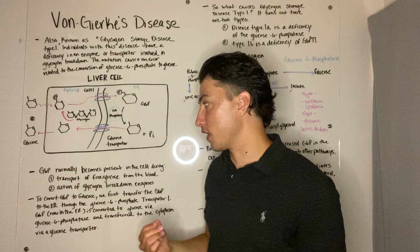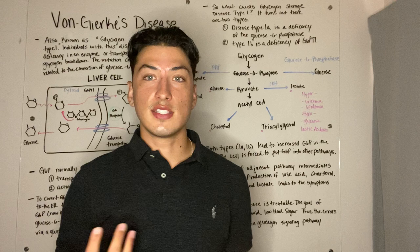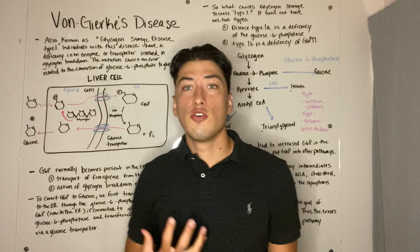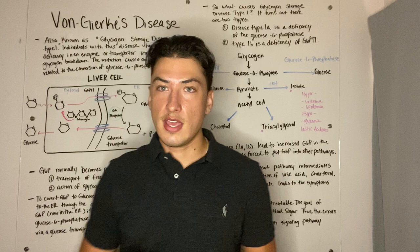Glucose 6-phosphate becomes present in two ways. First, transport of free glucose from the blood — after a carbohydrate-rich meal, insulin signaling will begin the uptake of glucose into the liver cell for glycogen synthesis. And second, the action of glycogen breakdown enzymes, so once glycogen is present, it'll be broken down and will yield a molecule of glucose 6-phosphate.